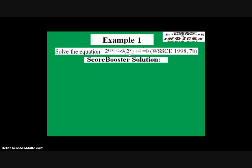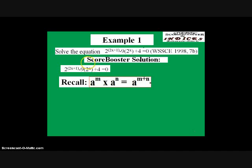The solution goes thus. The first observation is this 2 raised to power x. We are going to make everything that has a power of x to be in the form of 2 raised to power x. By so doing, we are going to apply some of the laws of indices. We recall the law that says a raised to power m times a raised to power n equals a raised to power m plus n. Sometimes it can be vice versa — you can go from one form to the other.